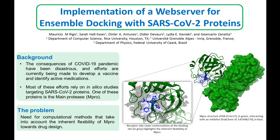Most of these efforts rely on computational studies targeting one or more proteins of SARS-CoV-2. The main protease is one of these proteins. Most studies, however, do not consider the flexibility of the main protease. One way to approach this is using an ensemble of pre-computed conformations.